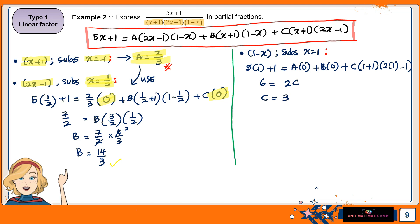For the last factor, 1 minus x: substitute x = 1. For the A term, it contains (1 minus x), so it becomes 0. The B term also contains (1 minus x), so it becomes 0 as well. For C, you have to substitute the value manually. After calculation, C equals 3.